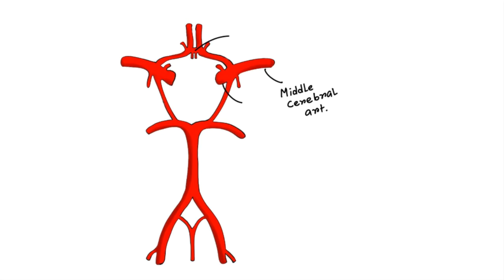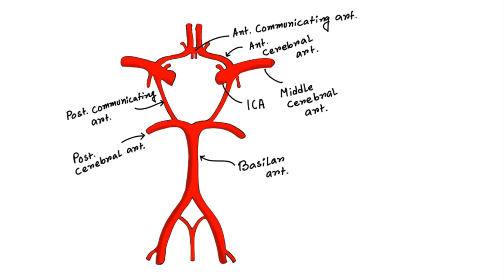First let's see the arteries which form the circle. From anterior to posterior: anterior cerebral artery, anterior communicating artery, internal carotid artery, posterior communicating artery, and posterior cerebral artery.